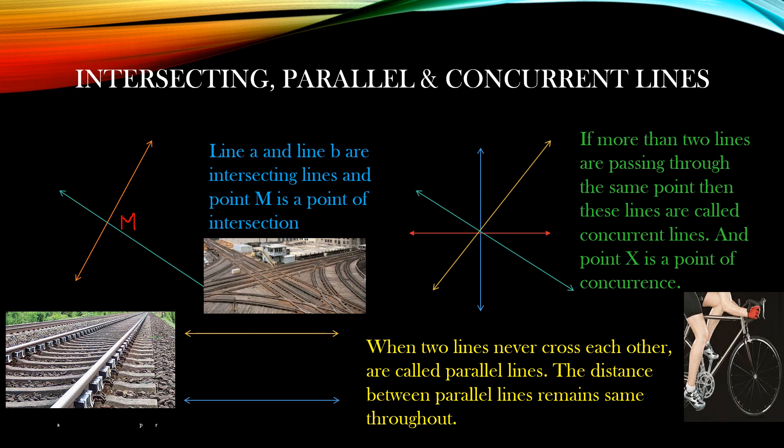Now here you can see these two lines. If you extend these two lines, they will not meet each other — they will absolutely not meet each other, and there is a specific distance between them. So these two lines are called parallel lines. The example you can see here is a railway track, which is an excellent example of parallel lines.